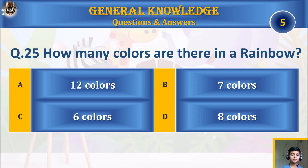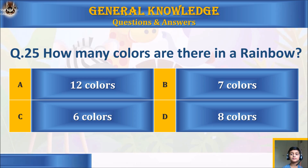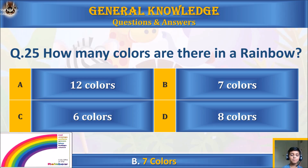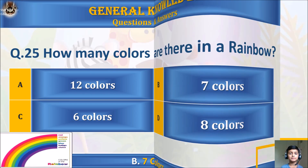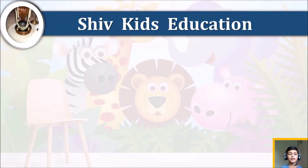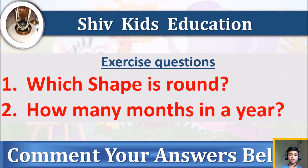Question twenty-five: how many colors are there in a rainbow? A) 12 colors, B) 7 colors, C) 6 colors, or D) 8 colors? Your time starts. The answer is B) 7 colors.